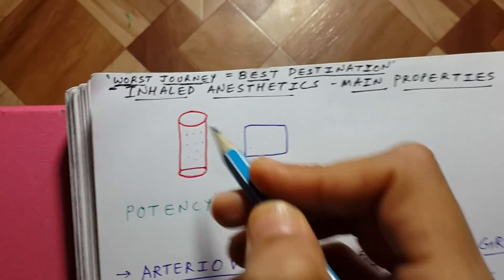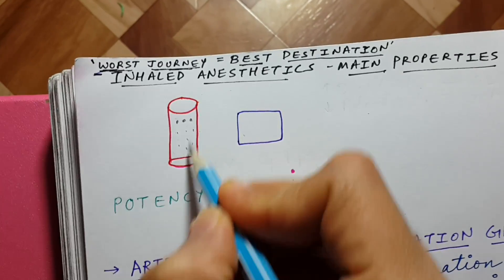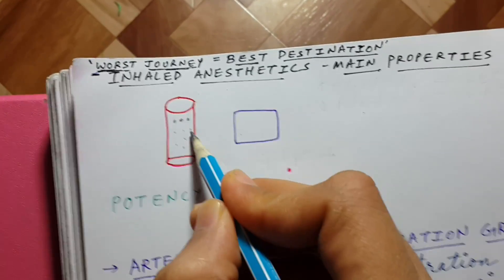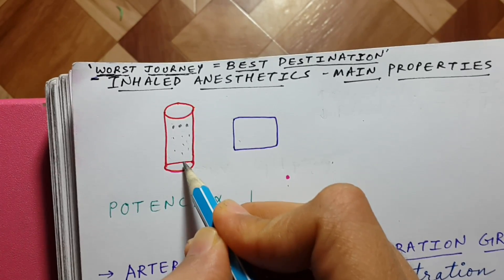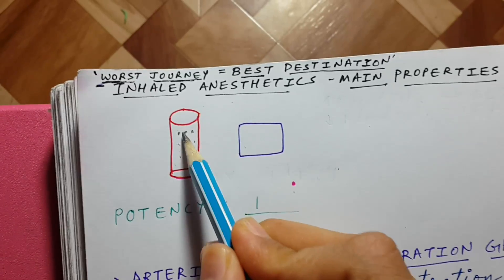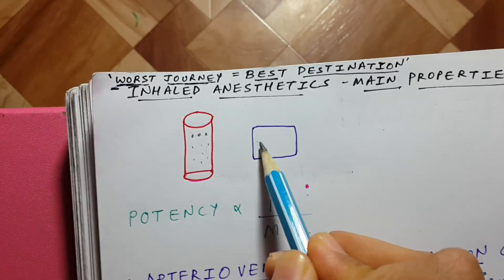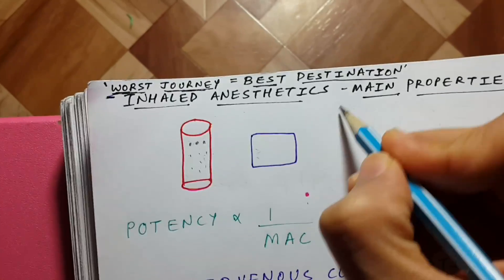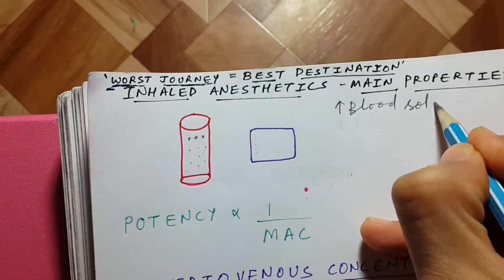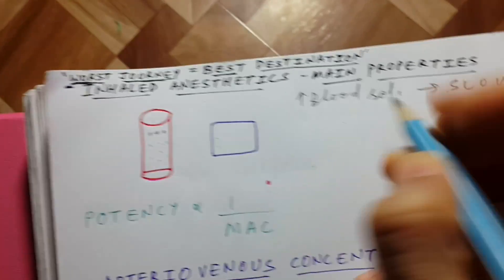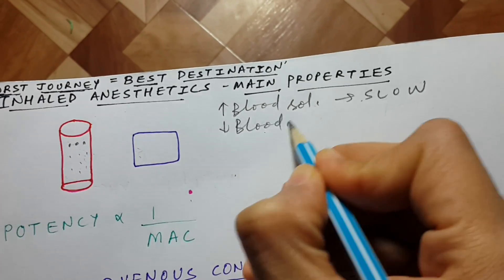If the drug is more soluble in the blood, it will remain in the blood and will not go quickly into the cell, so the onset of action of that anesthetic will be slow. If it is less soluble in the blood, it will quickly leave the blood vessel and enter the cell, so the onset of action will be fast. Increased blood solubility means slow onset; decreased blood solubility means fast onset.